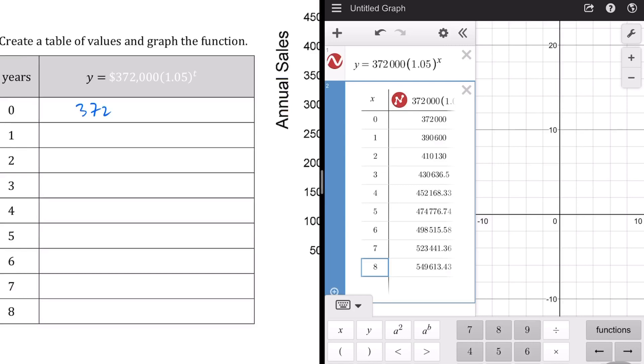Let me see if I can't bring this up here. Let's go ahead and fill out this table, just like we see it on the technology side. So, 372,000. At 1, it's 390,600. 410,130. 430,636.50, or 15 cents.